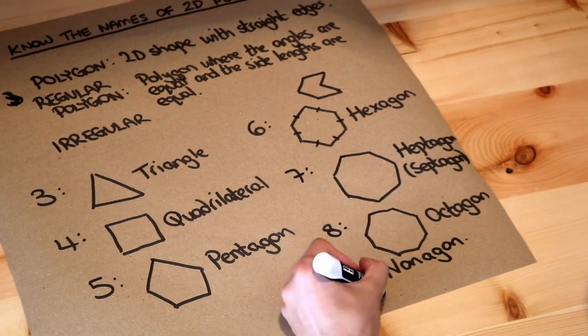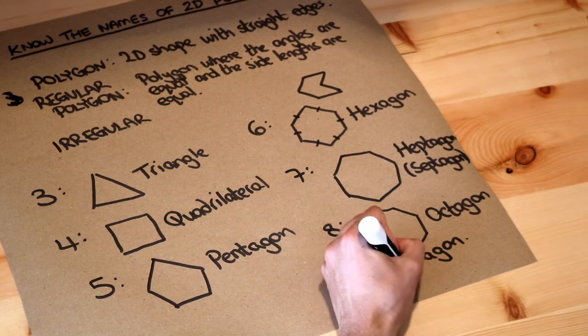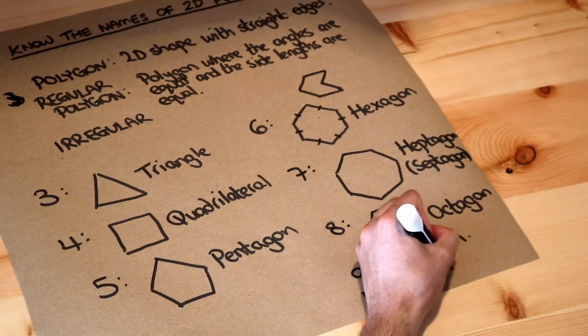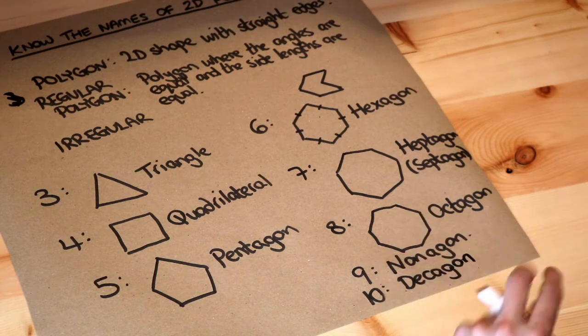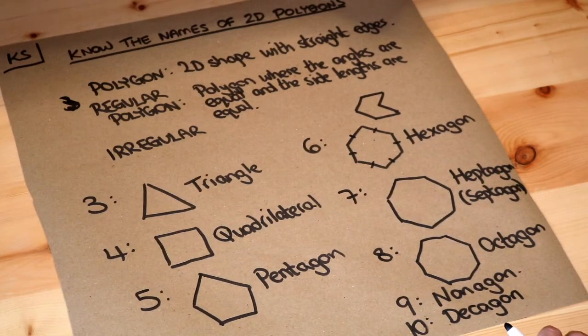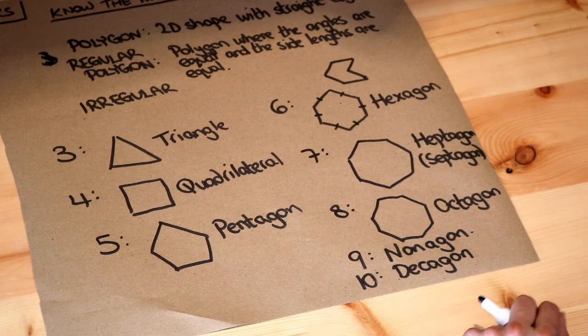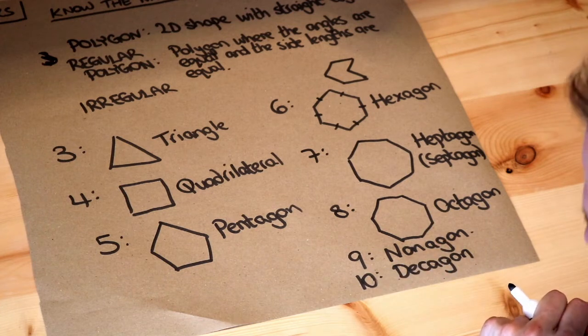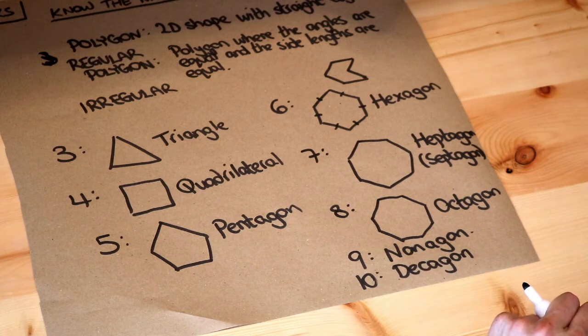And if it has ten sides it's called a decagon. And there are names beyond that but to be honest they're not in common usage and I kind of think if they're not in common usage well what's the point of knowing them? No one's going to be impressed that you know the name of a 17 sided polygon.